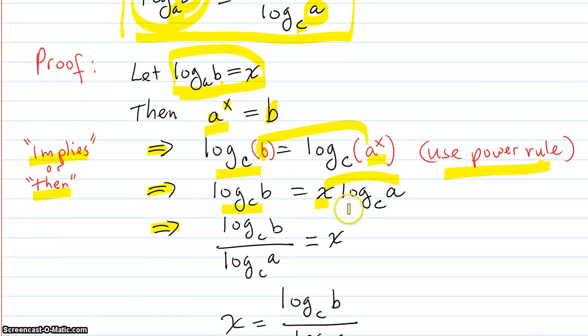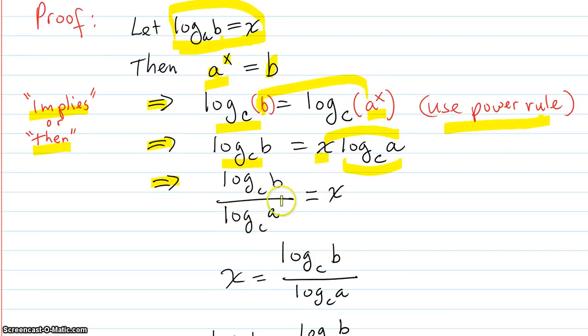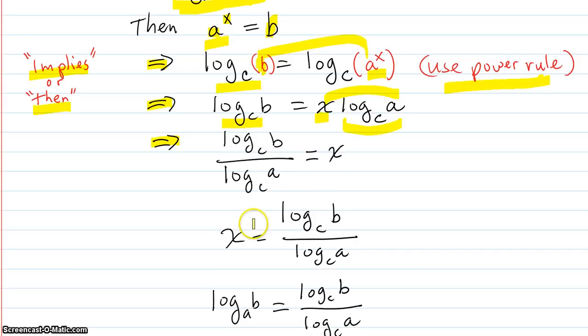And I'm just copying down this left hand side. Now we're going to divide both sides by log base c of a. It comes under, it cancels off the right, it comes underneath here on this side. And x is solved for. Then I'm just going to turn it around, rewrite it with the x on the left. x is log base c of b over log base c of a.